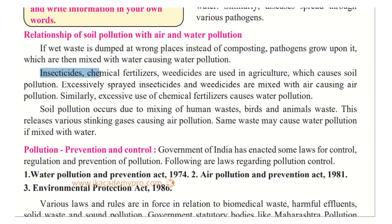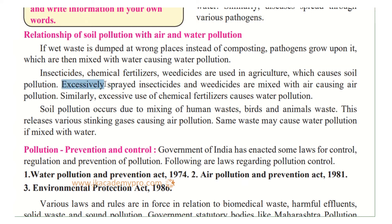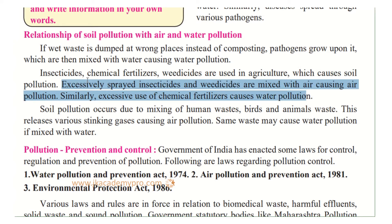Insecticides, chemical fertilizers, and weedicides used in agriculture cause soil pollution. We spray these on crops so they grow well and are not affected by pests, but they seep into the soil and go into the water. Excessively sprayed insecticides and weedicides mix with air, causing air pollution. Similarly, excessive use of chemical fertilizers causes water pollution, as these chemicals flow into water bodies.